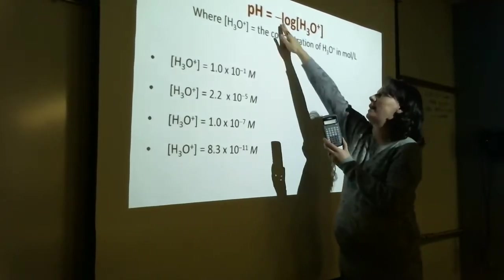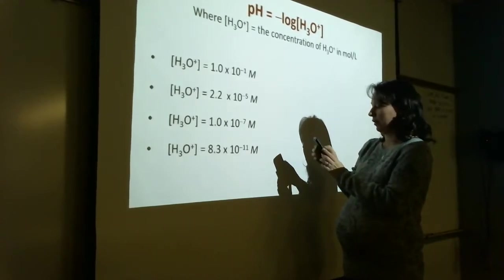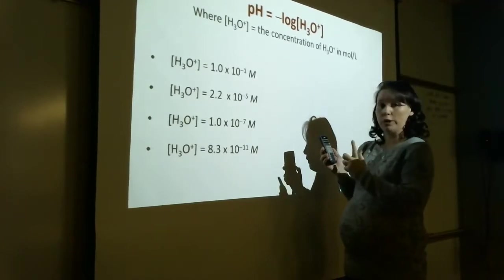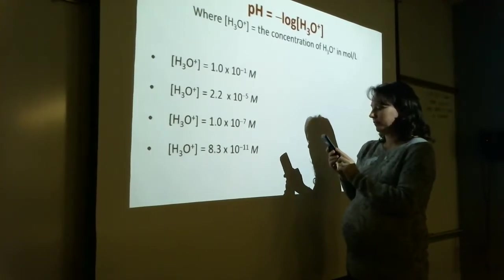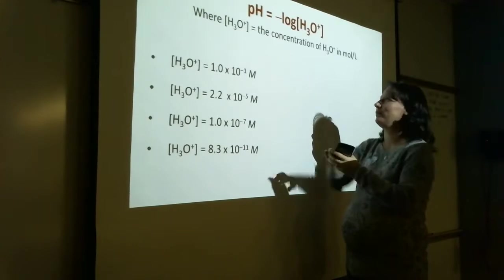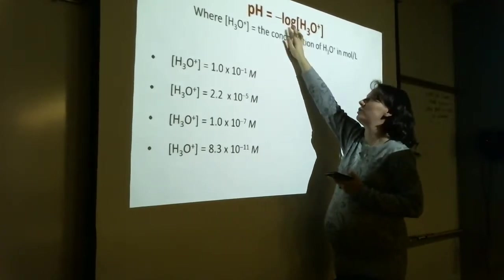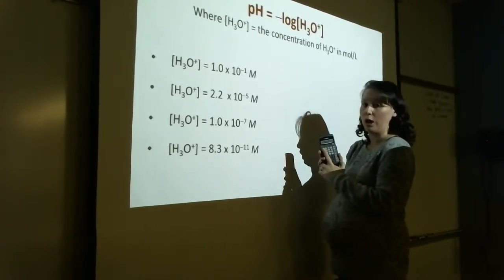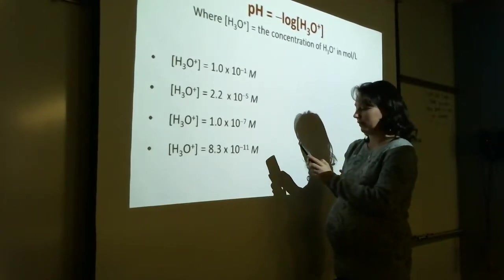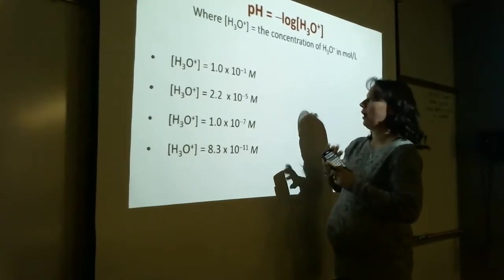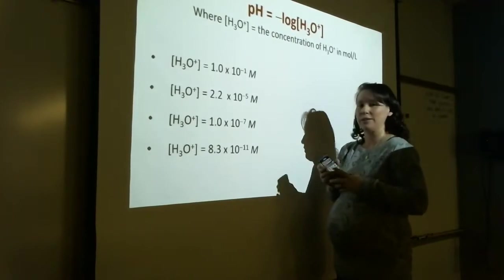On my calculator, if I enter that negative sign and then hit log, it tells me error. So I have one of two choices: you can put the negative and then parentheses and then do your log — though some calculators don't like that either. If yours tells you error when you type negative log, just remember to change the sign. Take the log of the number first; the logarithm will come out negative, and you just change the sign to make it positive. Some calculators will let you put parentheses around it, but it depends on how your calculator is programmed.